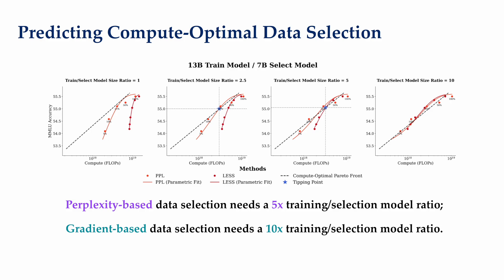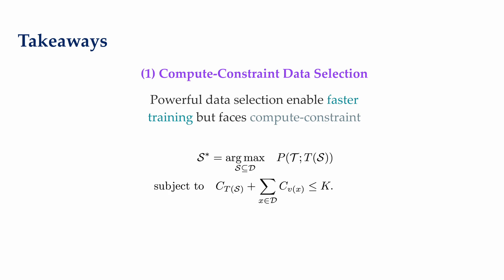For perplexity data selection, the method becomes compute optimal when a training model is 5x larger than a data selection model. In our case, this is around 35 billion parameters. For gradient data selection, our extrapolation indicates that the training model needs to be approximately 10x larger than a data selection model before it becomes compute optimal. In our case, this is around 70 billion parameters.